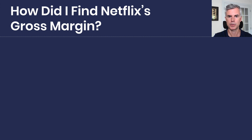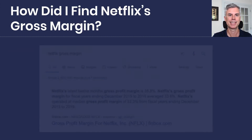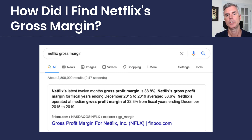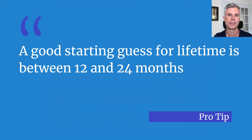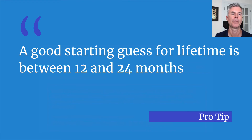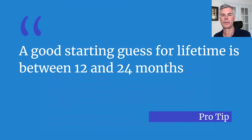How did I find Netflix's gross margin? I used Google — I typed 'Netflix gross margin' into Google and got that Netflix's latest 12-month gross profit margin is 38.8%, so I said 39%. I encourage you to do this. If you have to guess a lifetime — how many months people stick around — start between 12 and 24 months. You can assume you'll get better at retaining customers: 12-month lifetime in year one, stretch to 18 months in year two, 24 months in year three.